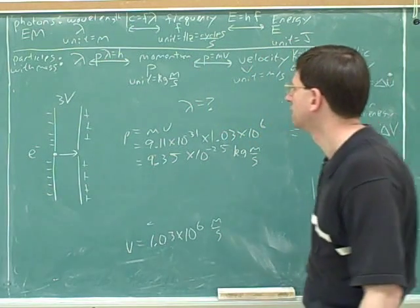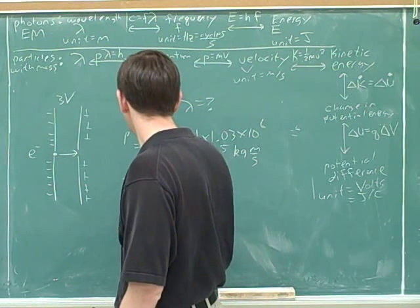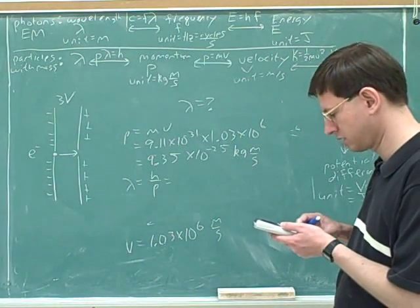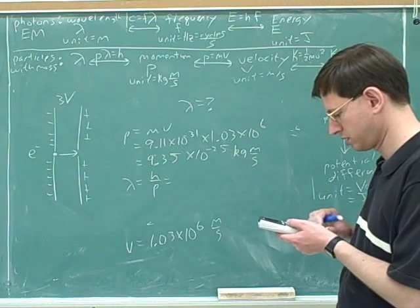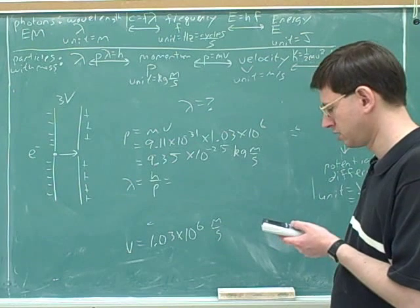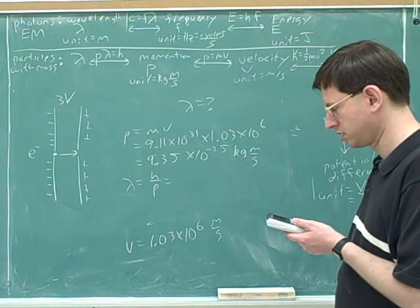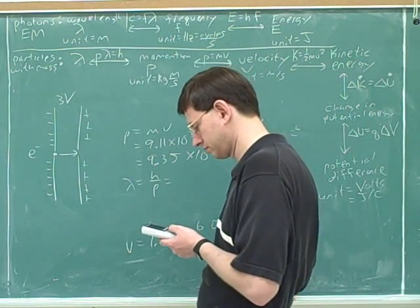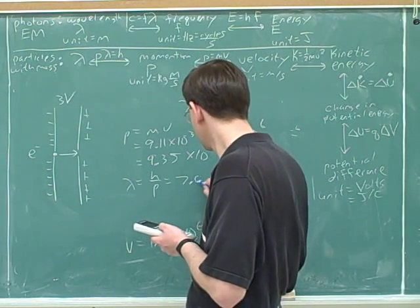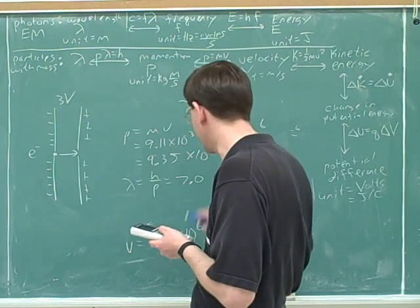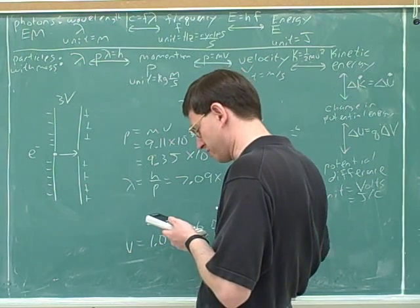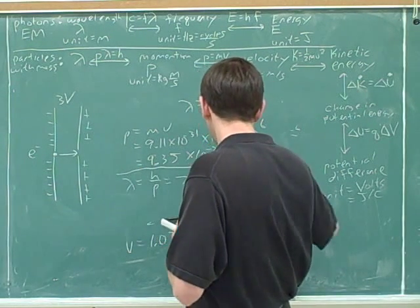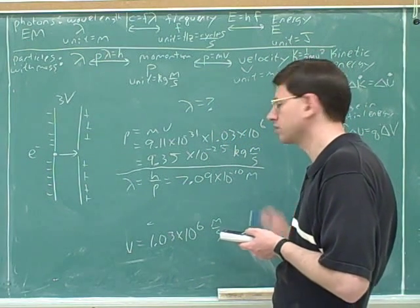Okay, and then H divided by P goes lambda. So 6.63 times 10 to the negative 34 divided by your answer is, so lambda is 7.09 times 10 to the negative 10th. Yeah, or depending on how you've rounded off, something like that. 7.09, 7.07 is what I got, times 10 to the negative 10th. And so that's in meters. Good.